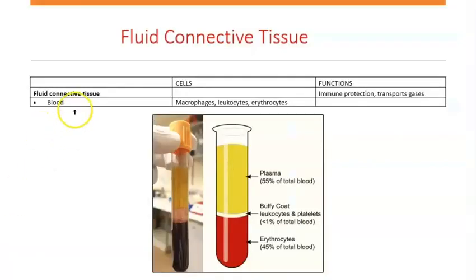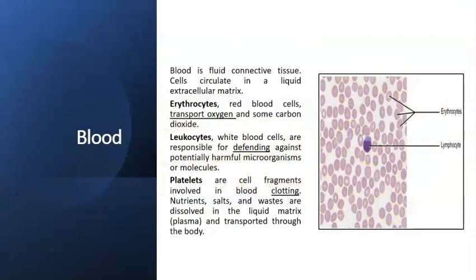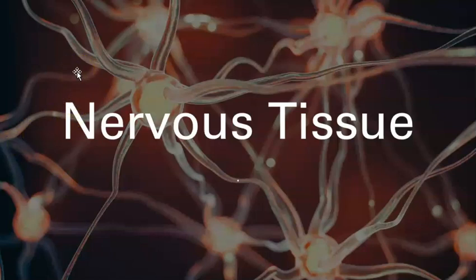Blood has a whole bunch of cells and multiple different functions. We have a figure of the blood here. Remember, we said that we have four primary tissues: epithelial, connective, nerves, and muscle.